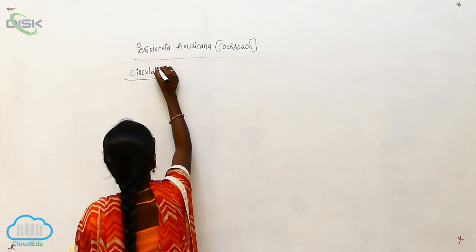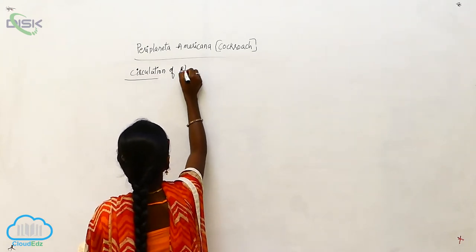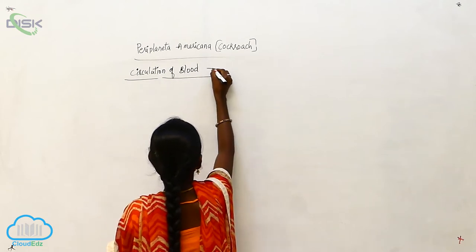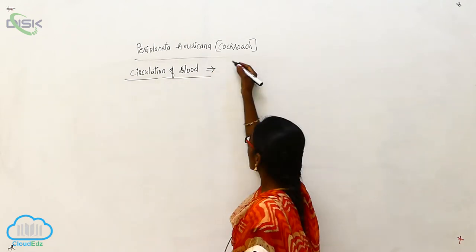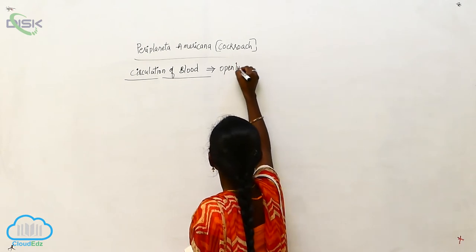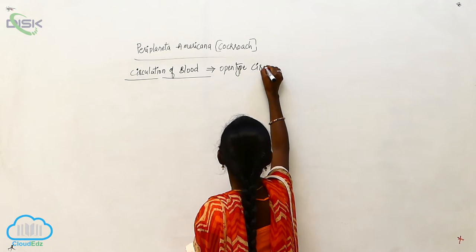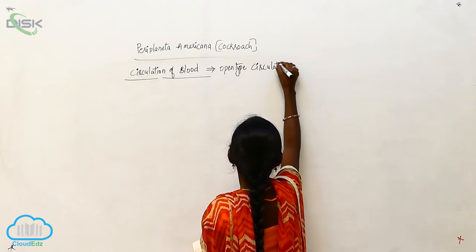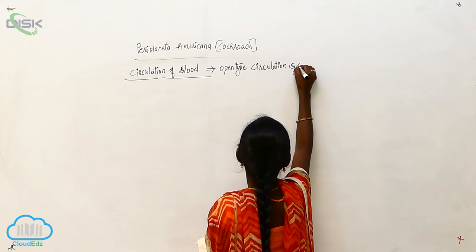Circulation of blood. The Periplaneta circulatory system is an open type circulation system.